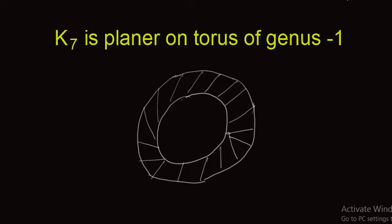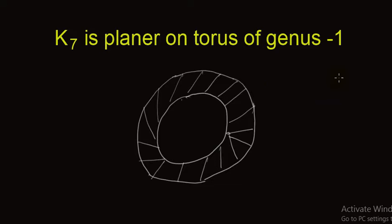Welcome students. In this lecture we show that K7, the complete graph of order 7, is planar on torus of genus 1. Before this we have proved that K6 and K5 are planar on torus of genus 1. You can find the links of my videos in the description and you can watch those videos. So K7 is planar on torus of genus 1 — this is our topic.